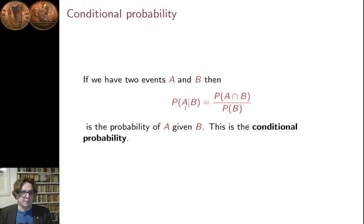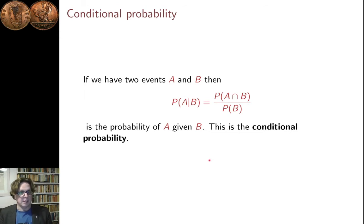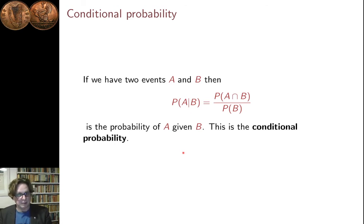This is the mathematical language for the conditional probability. If you have two events A and B, then the probability of A given B — in other words, the probability that if you are in event B you are also in event A — is the probability of A intersection B divided by the probability of B. So we've replaced 'given' with the mathematical symbol, this upright line, and defined the conditional probability: the probability of A conditioned on B, or given B, is the probability of A and B divided by the probability of B.